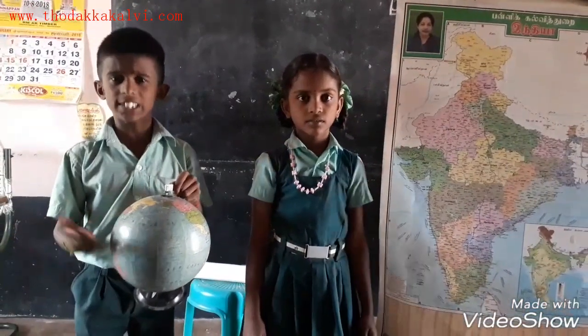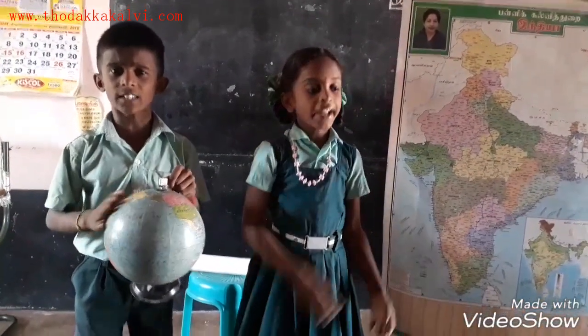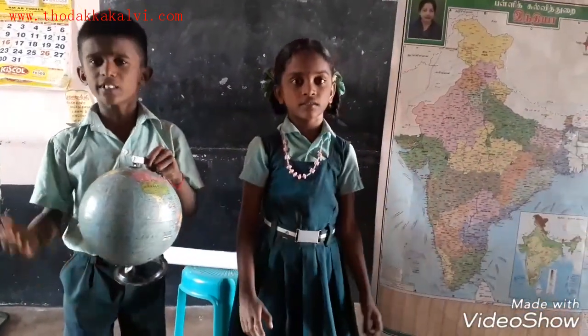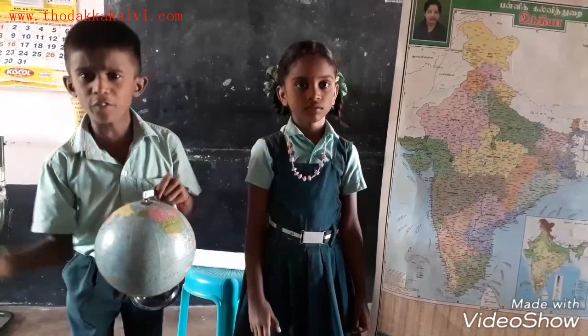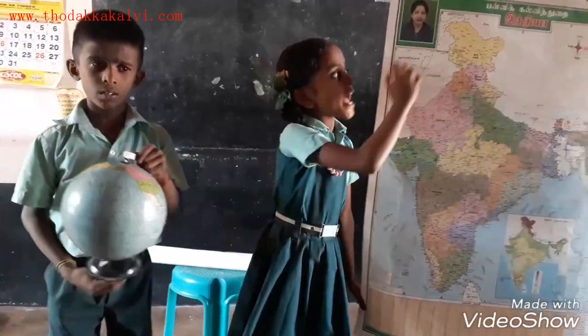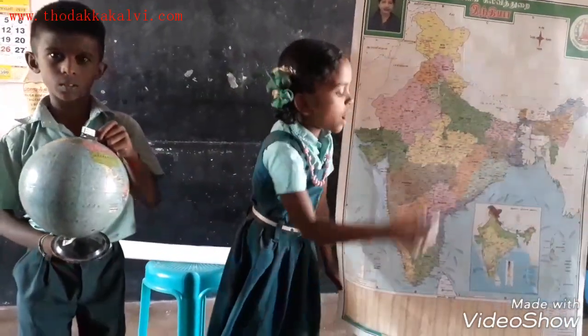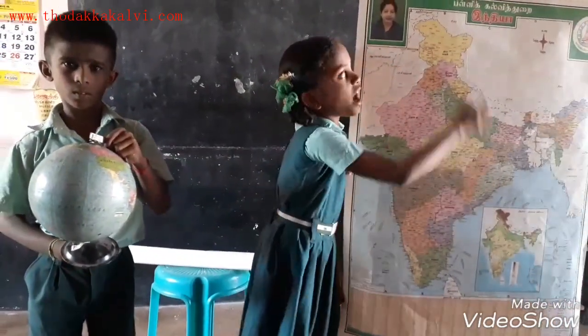The globe reflects the shape of the earth. The map reflects the earth's surface. The globe shows the entire earth. The map shows either the whole or a specific part.